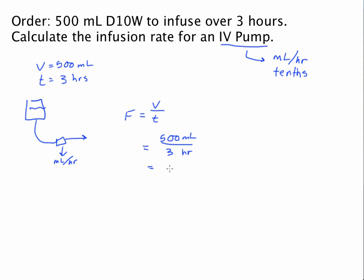So, if you do 500 divided by 3, you should get 166.6 repeating. Now, do not calculate this and round in all in one step.